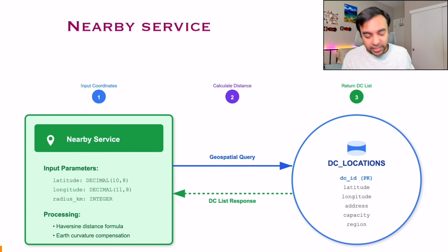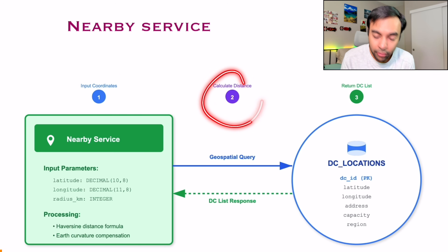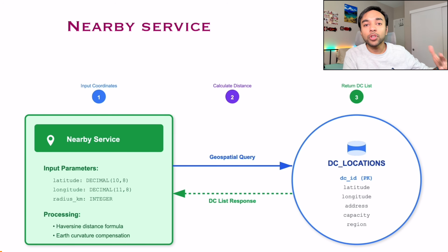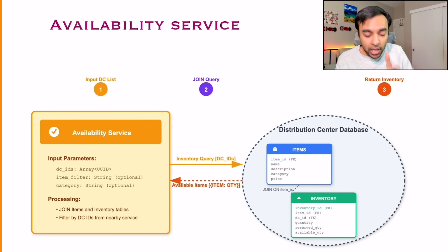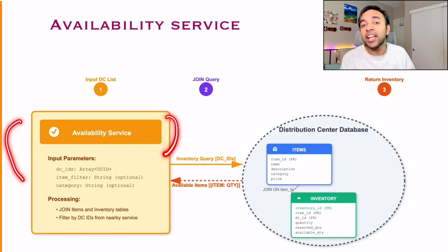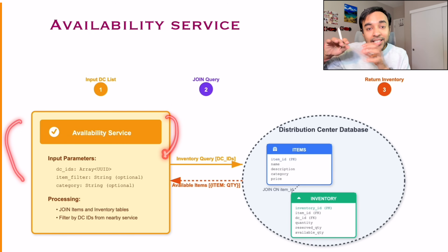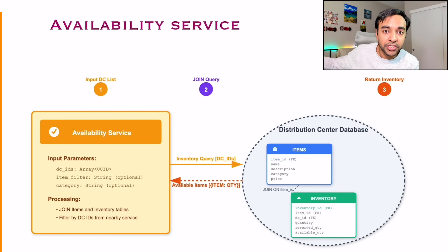Up till now, what we have done is created a nearby service, we are giving it some input coordinates, we calculate the distance and then we return a list of all the distribution centers. Now you have to determine — are all the items even available or not? And that is why we took a list of distribution centers rather than just one. Now I am going to design an availability service. This service is responsible to determine whether the items are available at a particular distribution center.